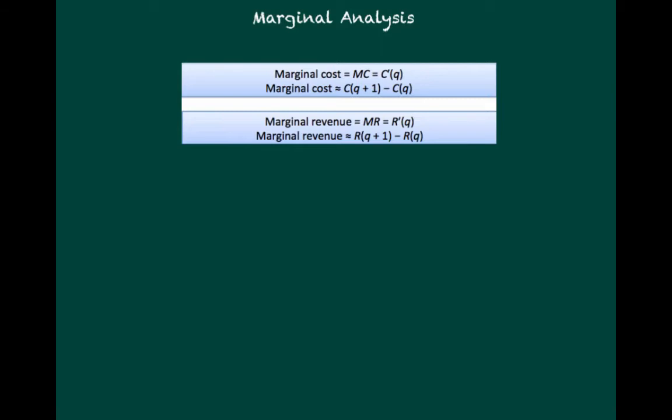Marginal revenue, on the other hand, is the revenue gained by selling one more t-shirt or one more item at the margin. So it's very similar to marginal cost. We figure out the revenue of the q+1 minus the revenue of q items. In other words, as an example, what's the revenue created by selling 101 t-shirts minus the revenue created by 100. That will tell us the revenue created by the 101st t-shirt.